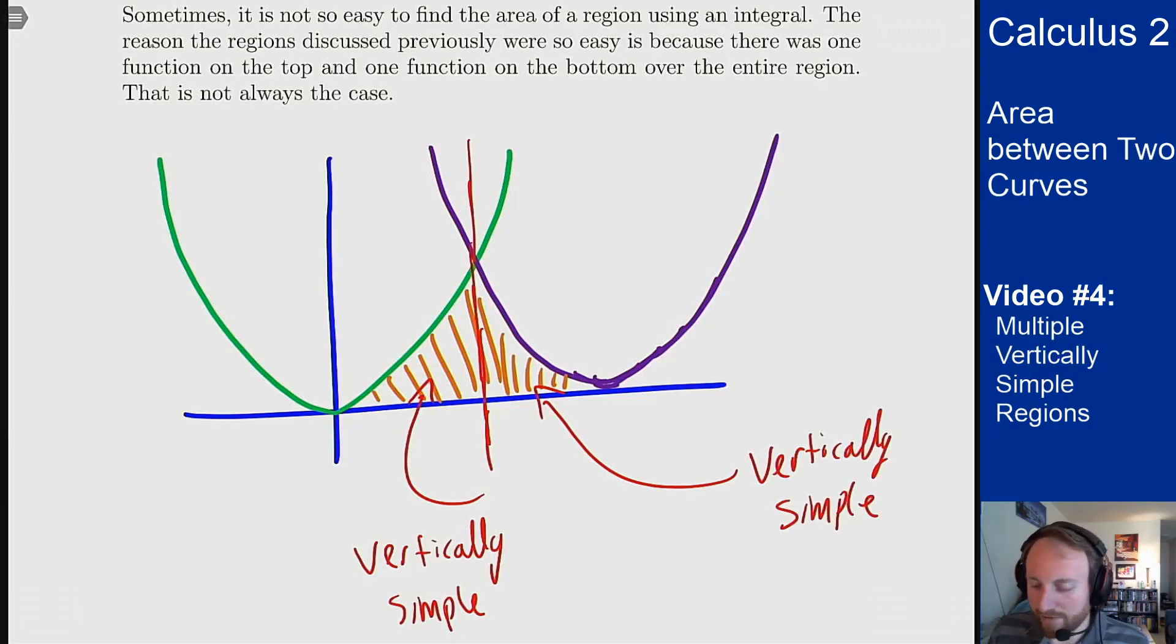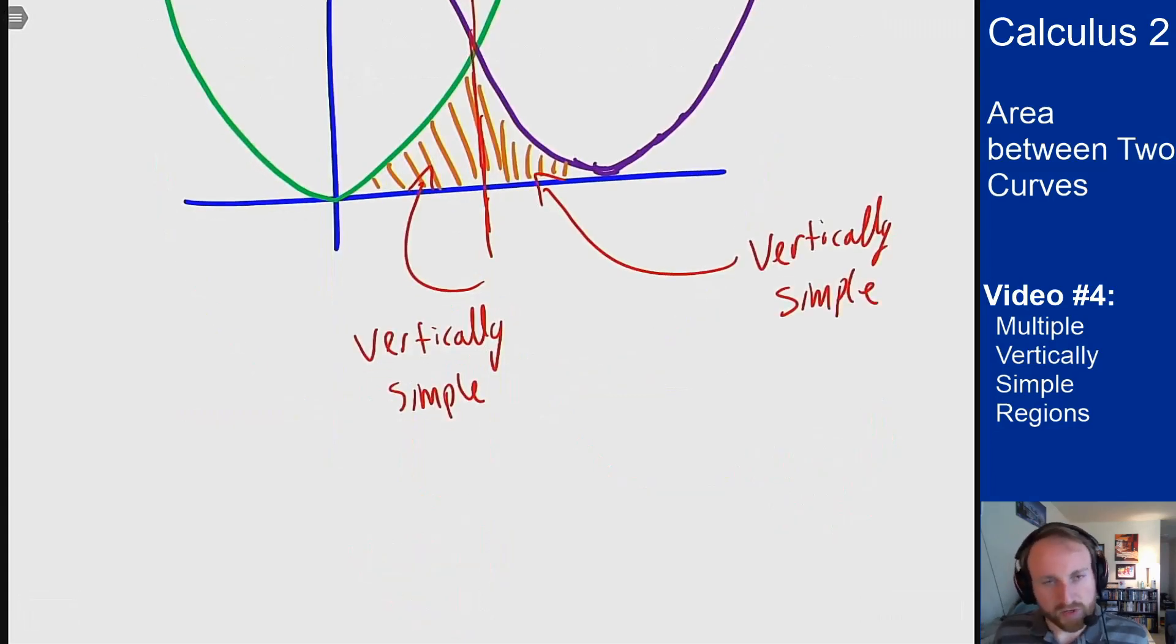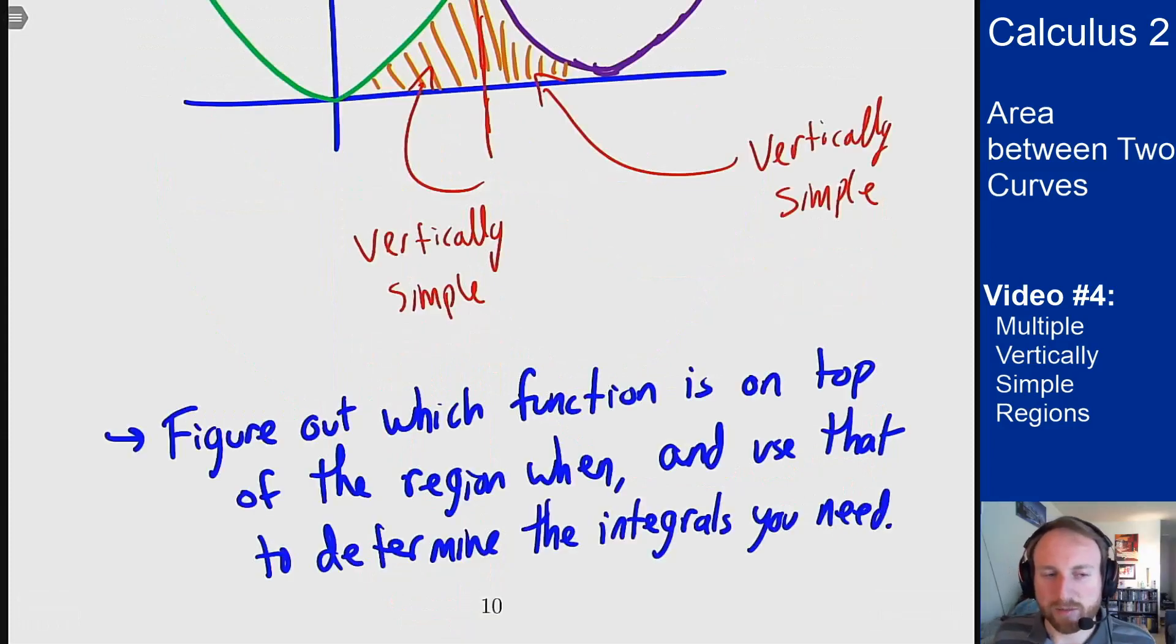So this is similar to having to split at intersection points before, but now we're just splitting because of the function that's on top, not because our two bounding functions crossed in the middle of this domain. So again the only real trick: figure out which function is on top when, and use that to determine your integral. And that's the main part of the process there.